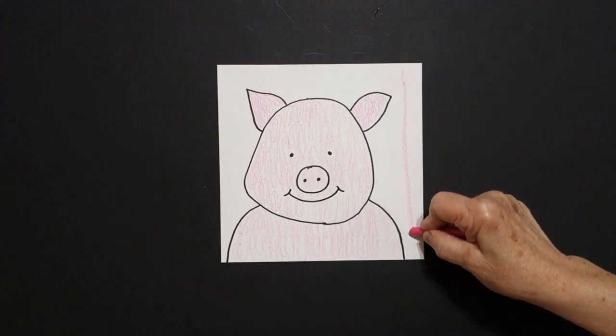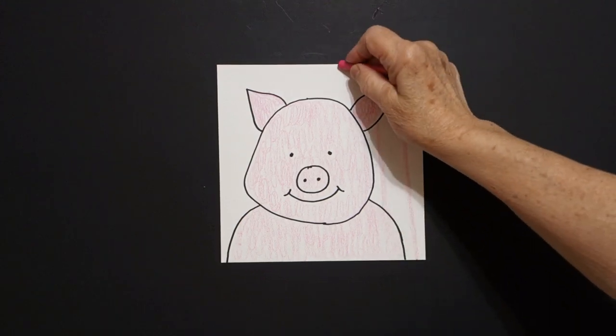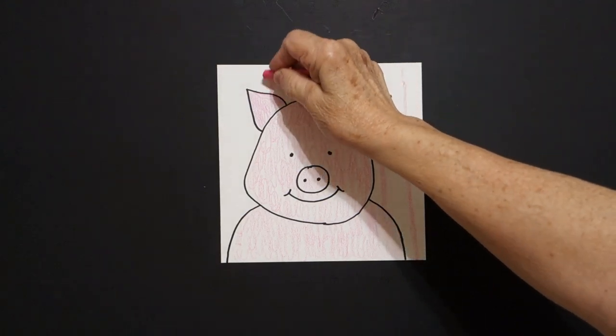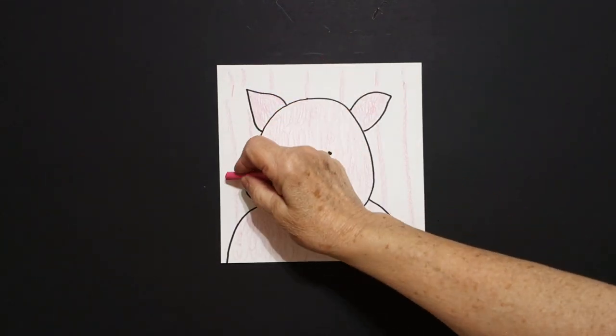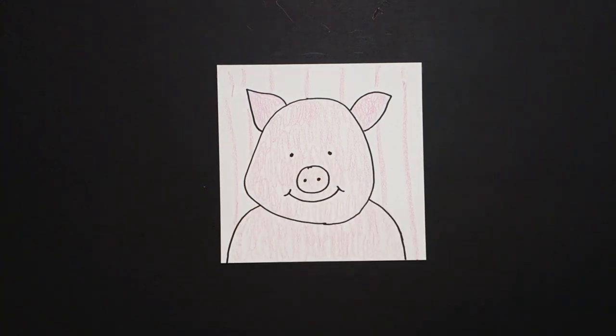Now the last thing I'm going to do is take my pink and just draw some straight lines in the background to finish my drawing. Don't draw through your drawing. This is the background. Ok, let's see what this looks like all colored in.